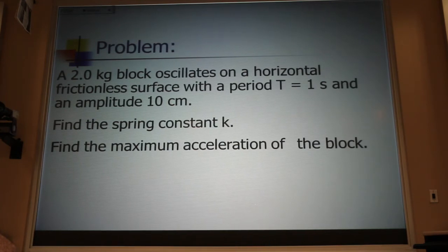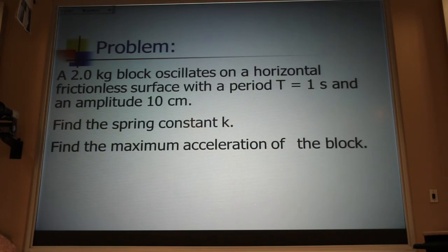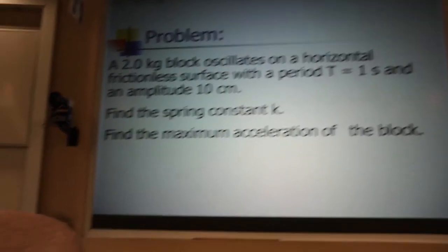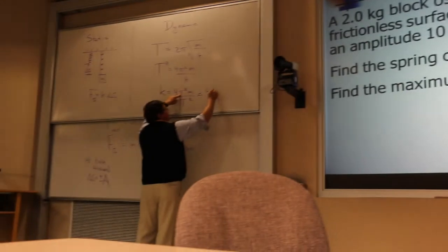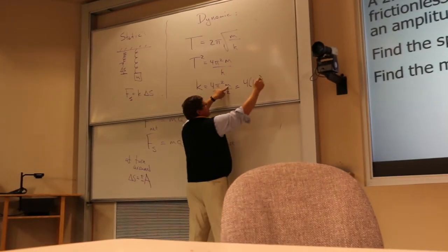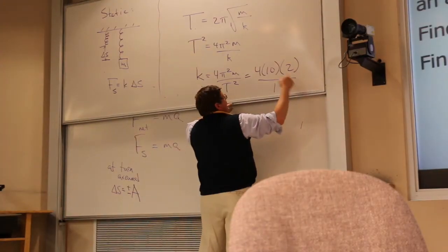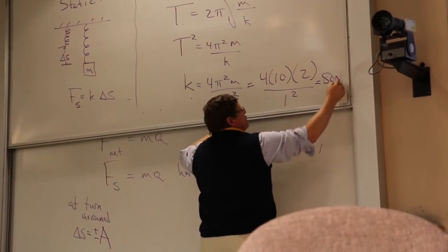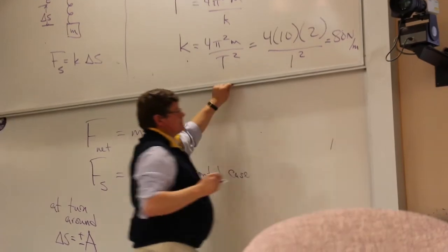We don't have enough information to do it the static method, so we have to do it with the dynamic method. We start here, we solve for k and get here. This becomes 4 pi squared, remember, is 10. The mass here is 2, and that's going to be 4 times 10 is 40 times 2 is 80 newtons for each meter.